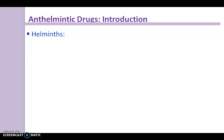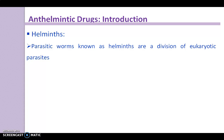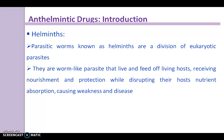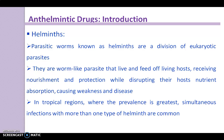Helminths. You must know about the helminths. The parasitic worms, known as helminths, are a division of eukaryotic parasites. They are worm-like parasites that live and feed off living hosts, receiving nourishment and protection, while disrupting their host's nutrient absorption, causing weakness and disease. In tropical regions, where the prevalence is greatest, simultaneous infections with more than one type of helminth are common.